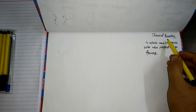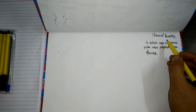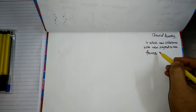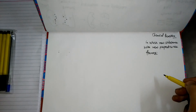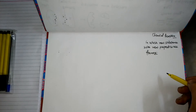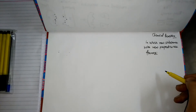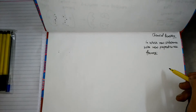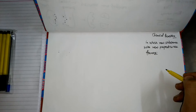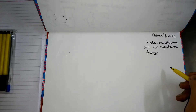Everything around us keeps on changing. During this process, a large number of chemical reactions take place. This piece of paper is white in color; after five hundred years it becomes brown in color. In the language of chemistry, we say a chemical reaction takes place. A piece of wood becomes black after a few years if exposed to air — we say a chemical reaction has taken place on the wood.